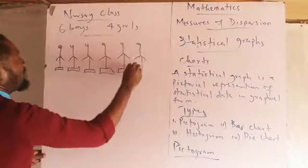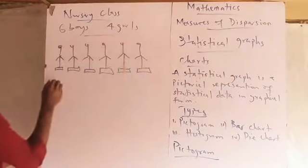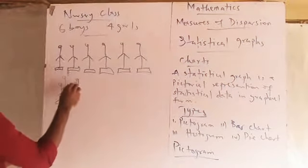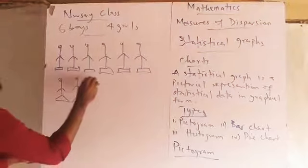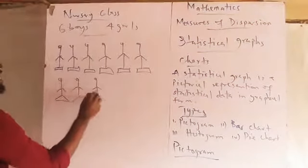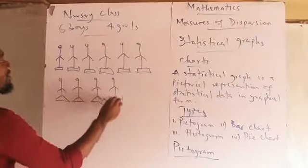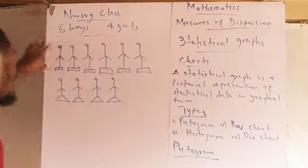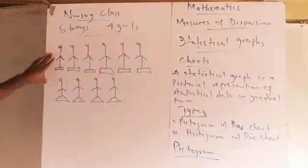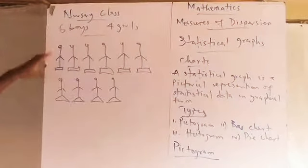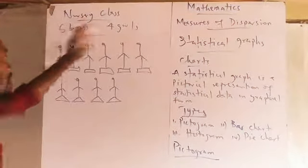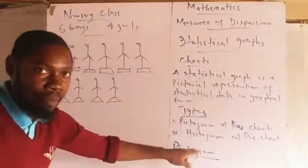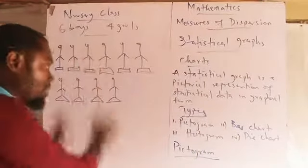Then for the girls, I'll use this diagram — you can see this is their skirt. So I've been able to use pictures to represent the data of six boys and four girls. This type of representation is called the pictogram.